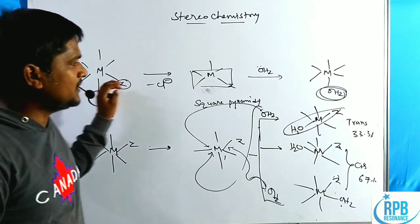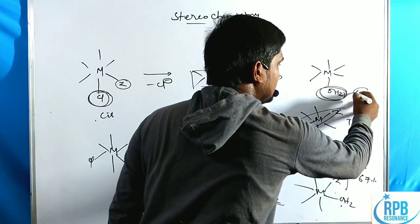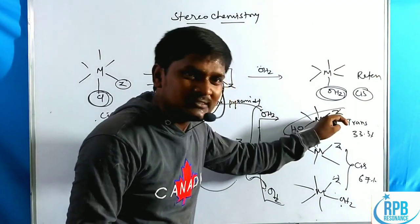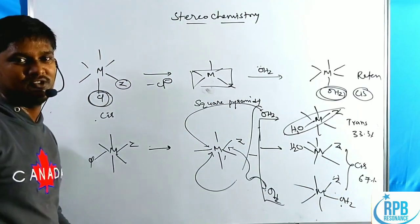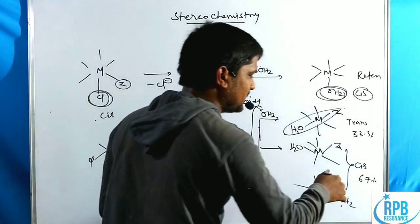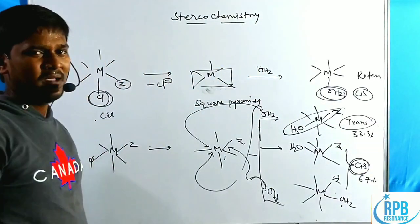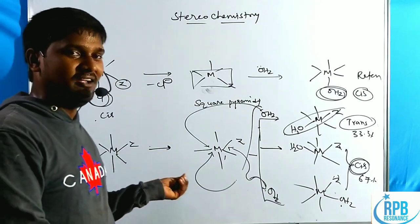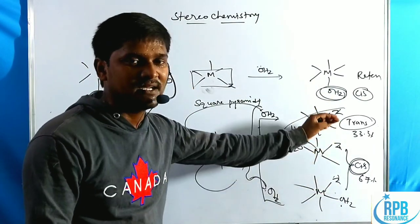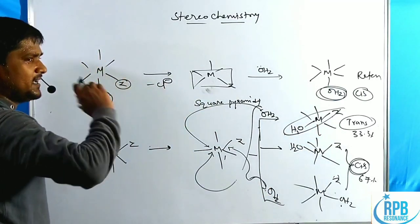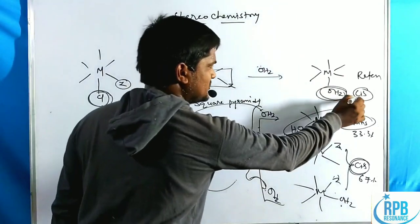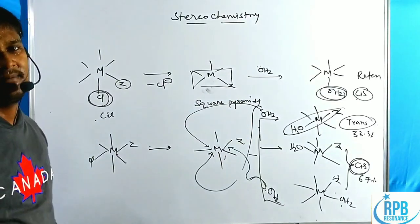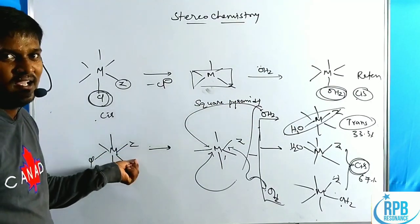Let us conclude. The cis isomer gives cis product only — that means retention of configuration. But in the case of the trans isomer, it gives both cis as well as trans — that means a racemic mixture. In the racemic mixture, cis is the predominant product compared to trans. However, based on the adjacent inert ligand (Z, the spectator ligand) nature, these stereochemical aspects will change. But in every case, whatever the ligand nature, the cis compound always gives the cis product. Let us go through what happens when different ligands are present in the place of the Z ligand.